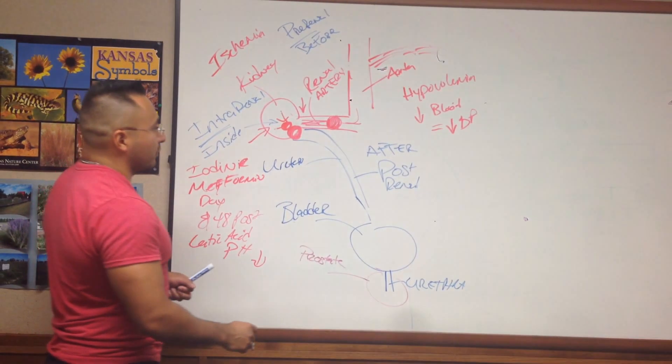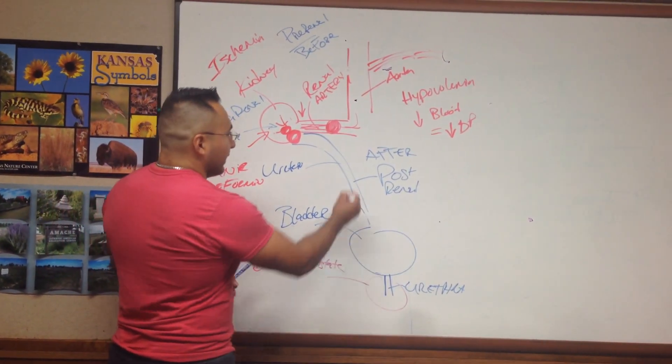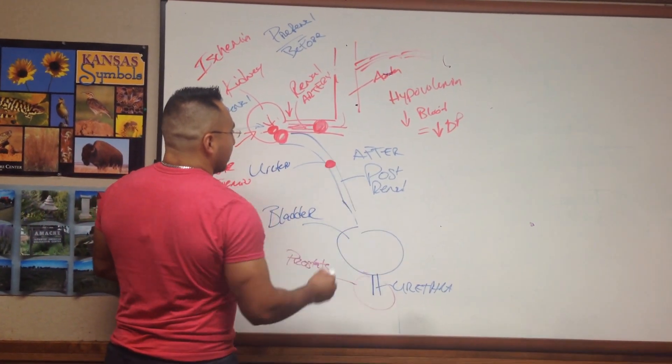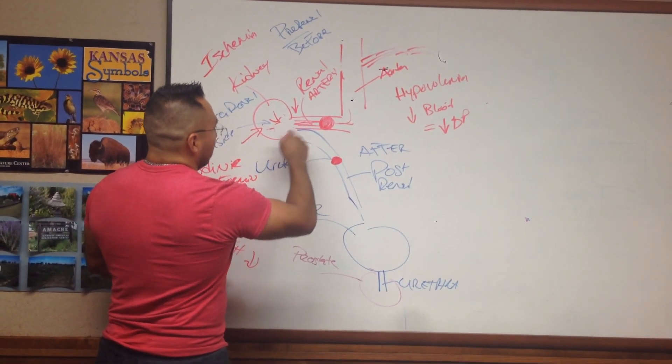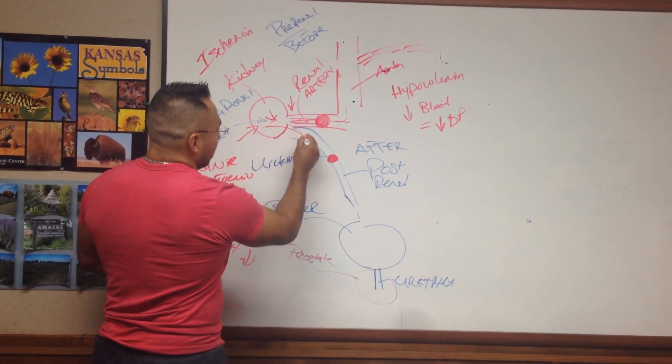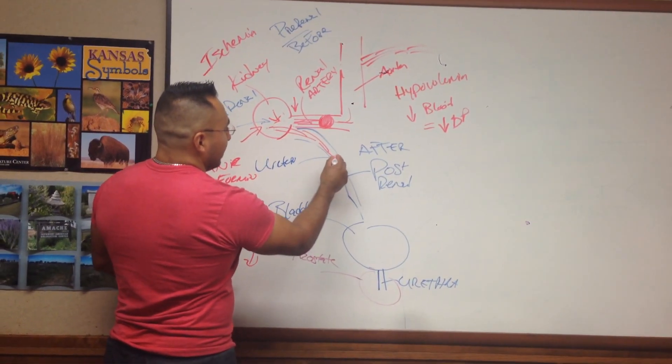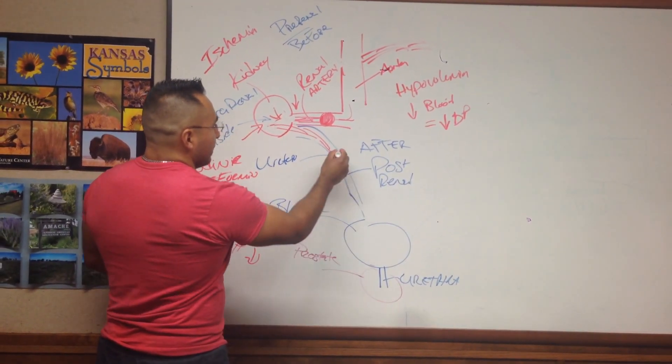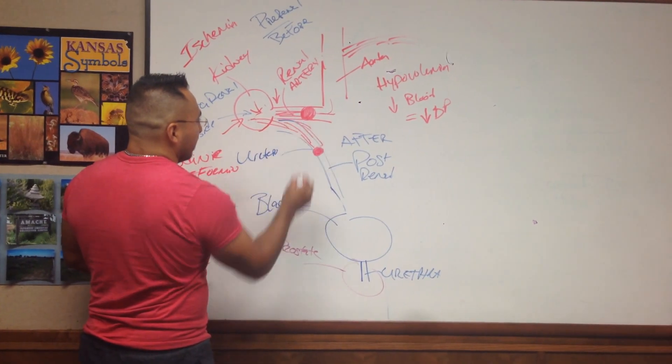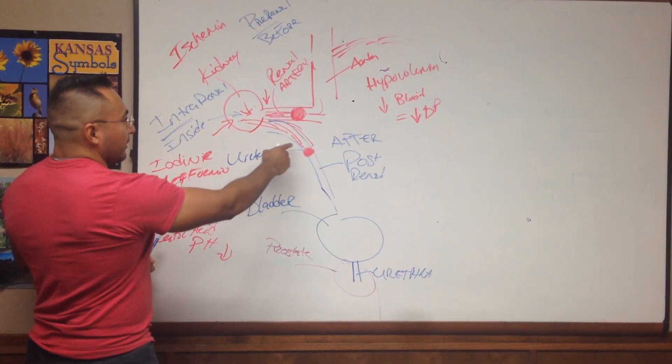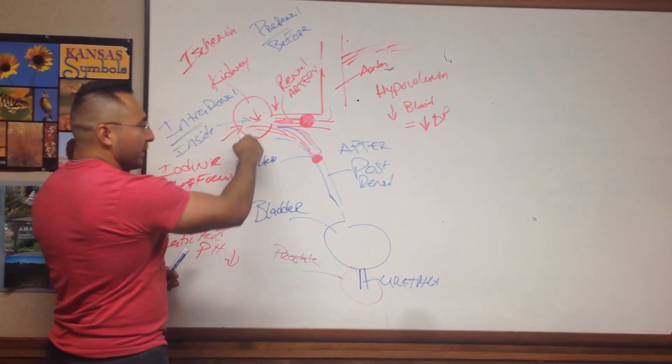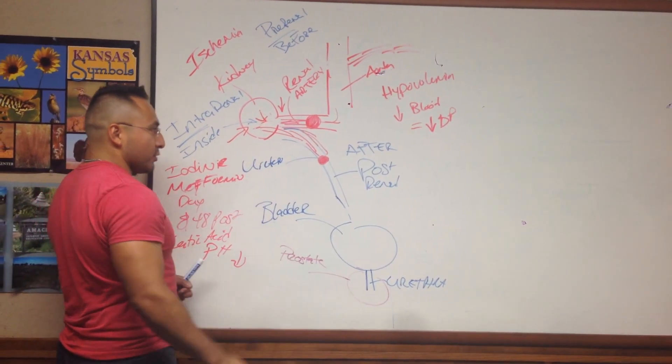Post-renal failure would be if you have like a kidney stone here. Again, the urine can come through here and then it gets blocked off because of the stone causing an occlusion. So this urine backs up. And just like here, all this urine accumulating in here causes an infection which can destroy your kidney.